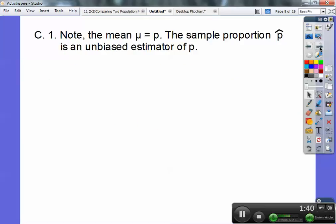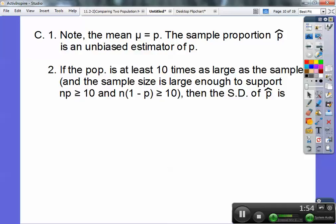So section C, number one, note that the population mean is going to equal our P. So the sample proportion, P-hat, is the unbiased estimator of our population proportion, P. So if the population is at least ten times as large as the sample, and the sample size is large enough to support np ≥ 10 and n(1-p) ≥ 10, then the standard deviation of your P-hat is this formula.